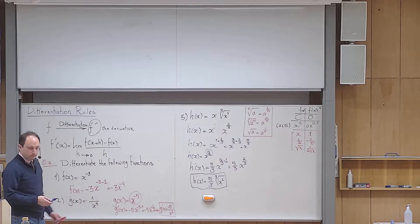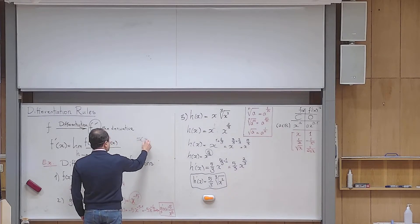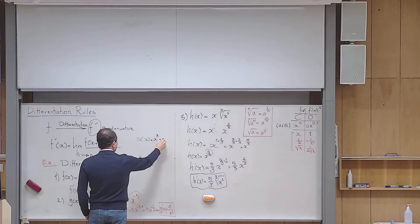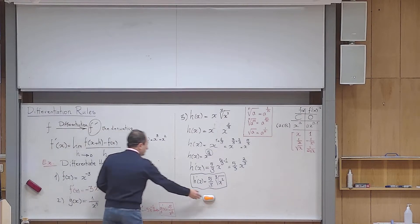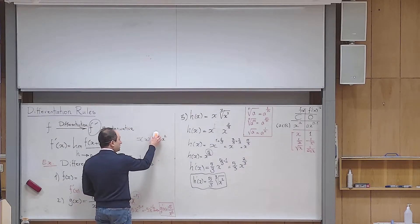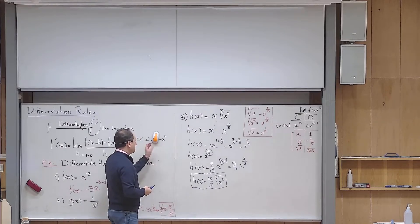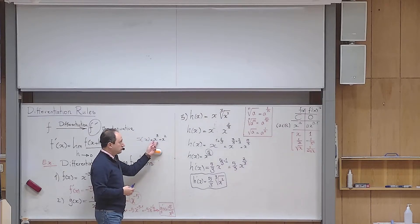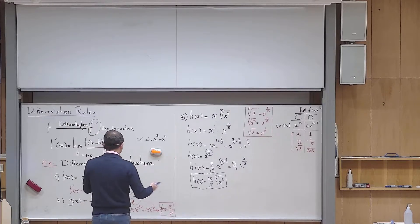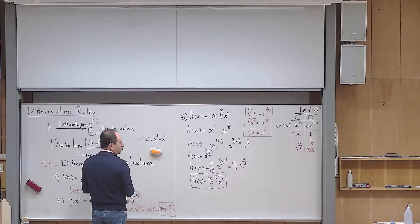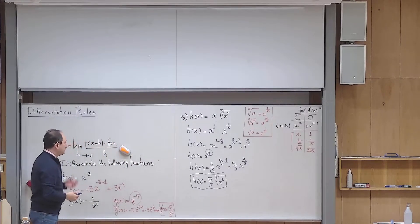Now, if I give you f(x) = x³ + x², we know how to differentiate each part separately, but there's no guarantee that the derivative of the sum equals the sum of the derivatives — we need rules for that. I want to introduce two rules not explicitly stated in the book but used all the time.